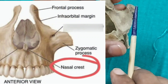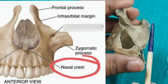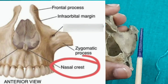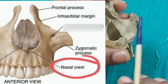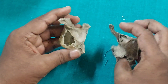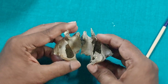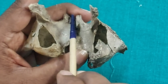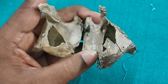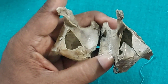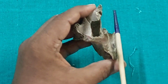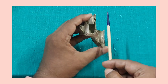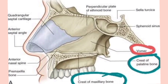When the two palatine processes meet in the midline, they form an elevation or crest called the nasal crest, which extends upwards. Anteriorly, this crest is more prominent and is called the incisor crest, close to the incisor teeth. The palatine crest articulates with the lower border of the vomer, forming the main part of the nasal septum.